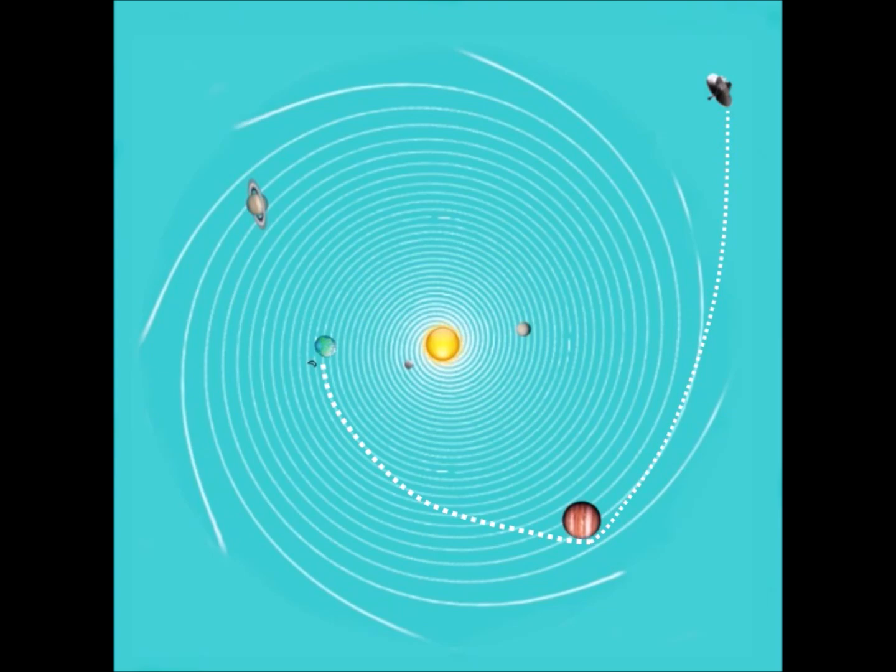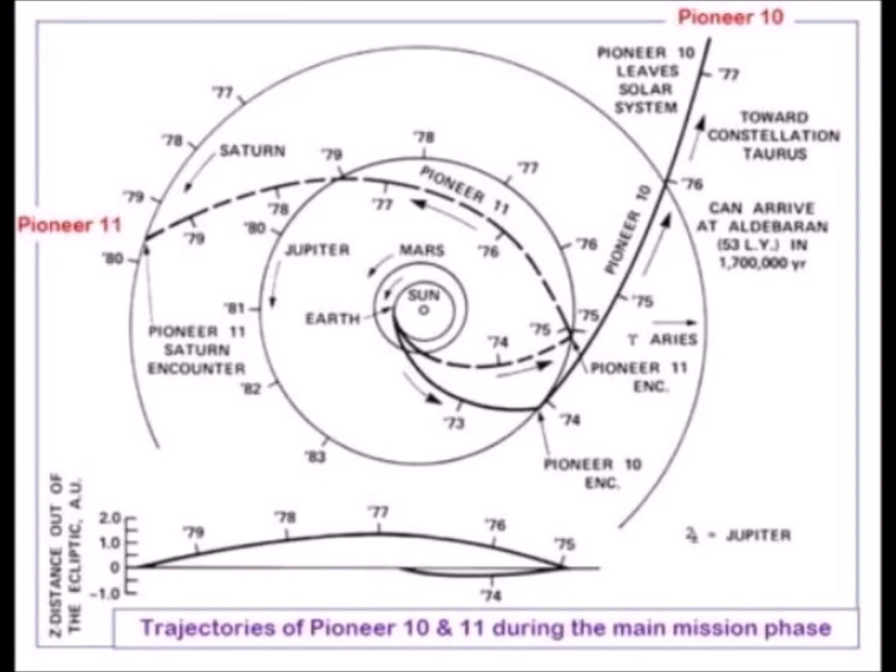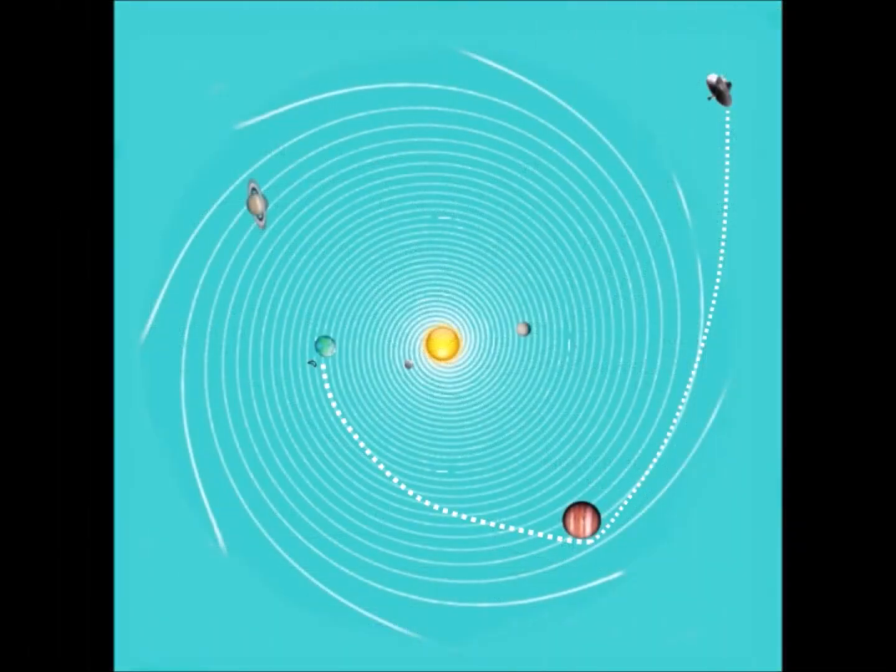The Pioneer 10 probe is located 10 billion kilometers from the sun and is moving away from it at 12 kilometers per second. At this distance, the speed of the solar whirlpool is only about 3.6 kilometers per second.